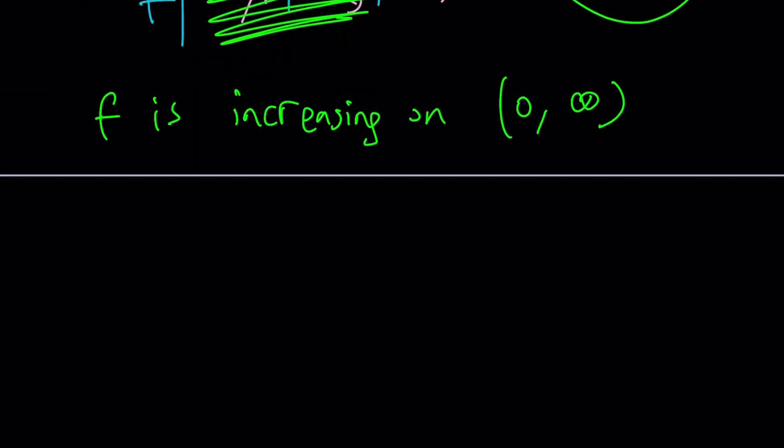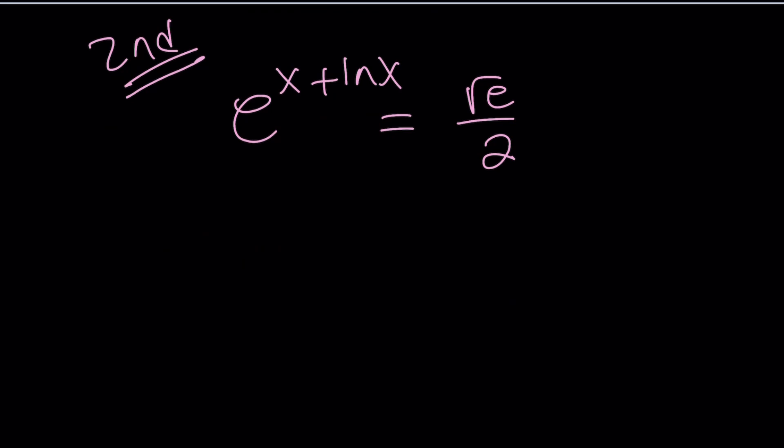So let's take a look at the second solution. The second method basically takes the original equation and just works off of that. No logging both sides. Let's split this into a product because that's when we add the exponents. Square root of e can be written as e to the power one half divided by two which is one half times e to the power one half.